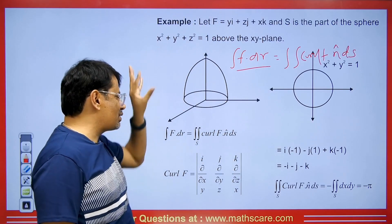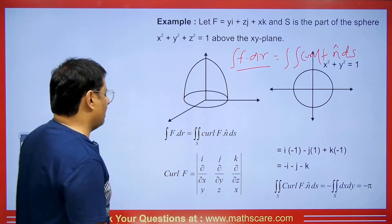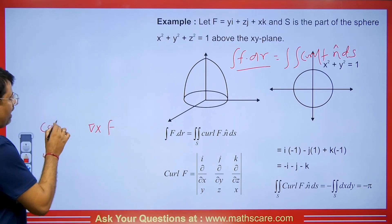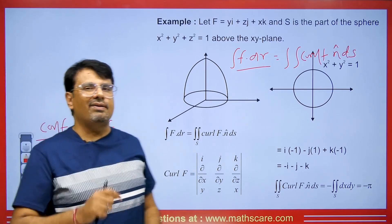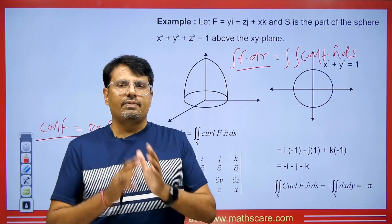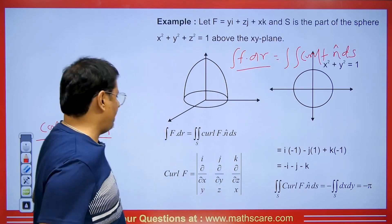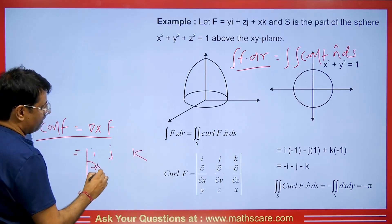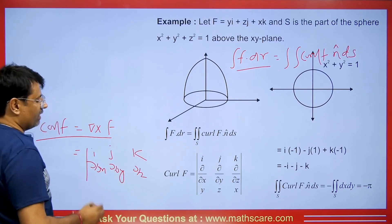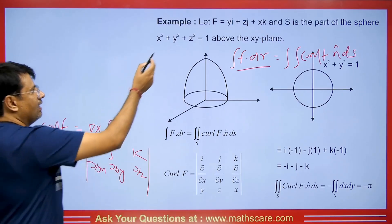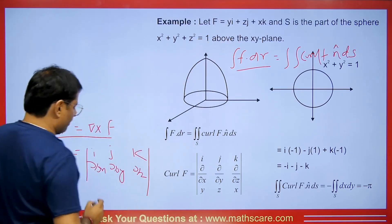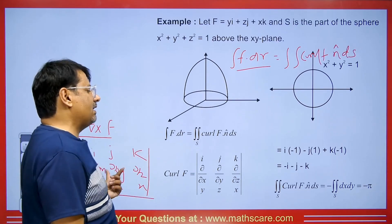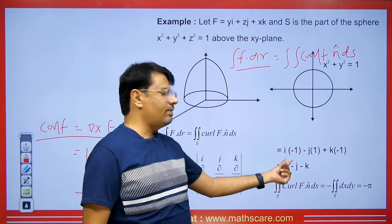First, we will find the curl of f. The curl of f is del cross f. We set up the determinant with i, j, k in the first row; del/dx, del/dy, del/dz in the second row; and the coefficients y, z, x in the third row. Calculating the determinant gives curl f = -i - j - k.